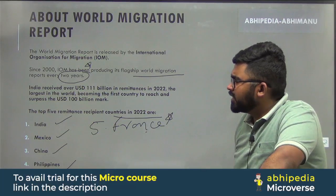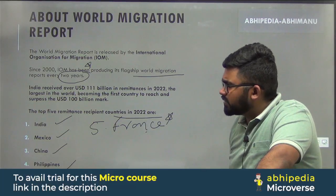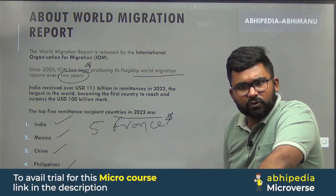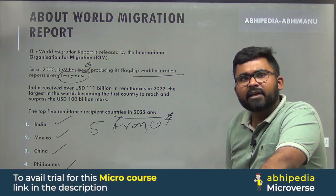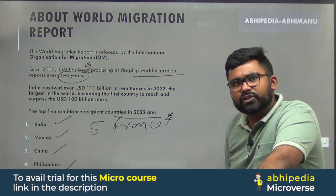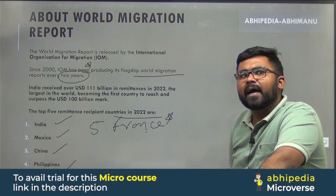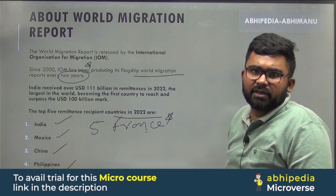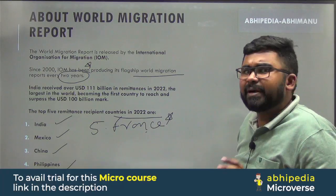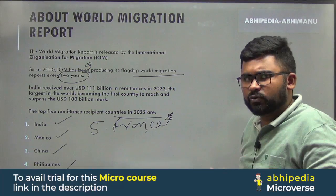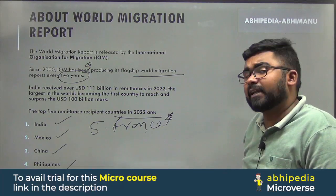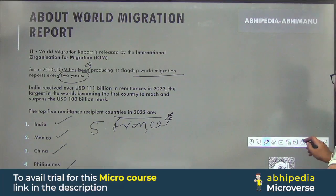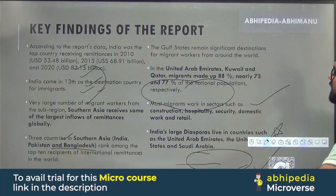The fifth one is France — that is a slightly unique entry. The first four — India, Mexico, China, and Philippines — you should definitely memorize. And if anyone doesn't know what remittances are, please read up on it as it will also cover your static portion.